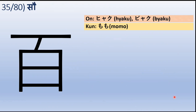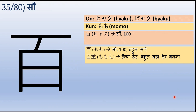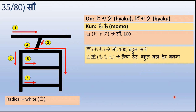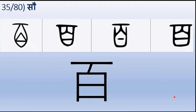Ab hum aage badhate hain — ye sao ki kanji hai. Onyomi mein kehte hain Hyaku, aur kahin kahin Byaku ka bhi prayog kiya jaata hai. Jaise ki jab teen sau hum kehenge, to ye Sambyaku ho jaayega, na ki Sanhyaku — Sambyaku. Kunyomi mein isse Momo kehte hain. Iska arth wahi hai — sau. Aur kunyomi mein sau ke alaawa, iska arth bahut saare bhi ho sakta hai. Aur agar hum isse Momo-e kahein, to iska arth hoga uncha dher ya bahut bada dher banana — jaise hum huge pile ya leap kehte hain angrezee mein. Ye safed radical se aaya hai aur ye iska stroke order hai. Iska udbhav is tarah hua — shuru mein ye is tarika ka chinha tha, dhire dhire evolve hote hue ye aaj ke is adhunik chinha par hum pahunche hain.